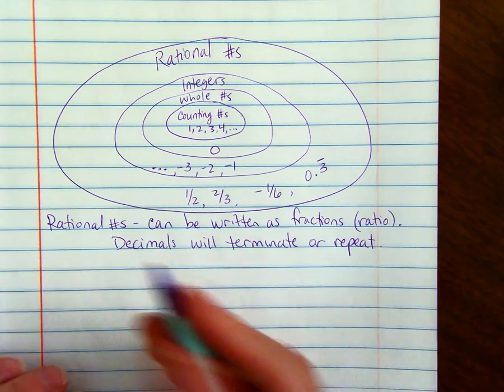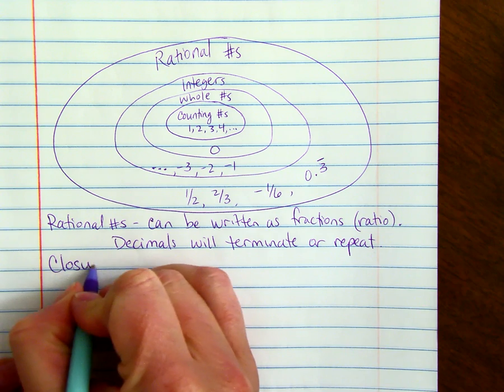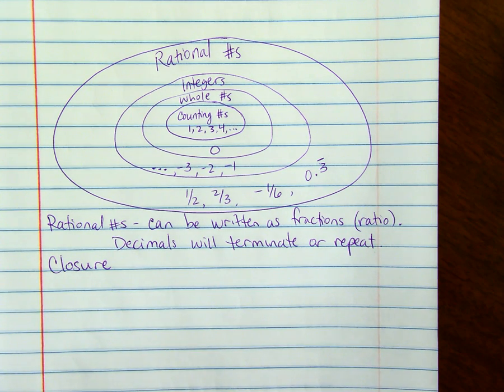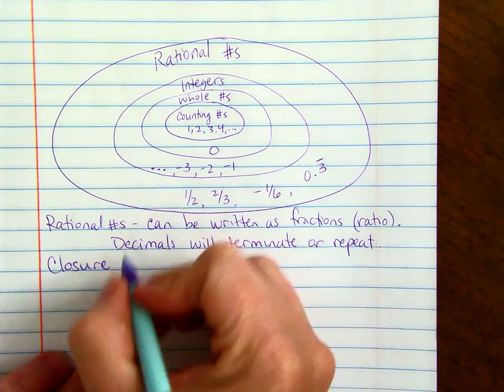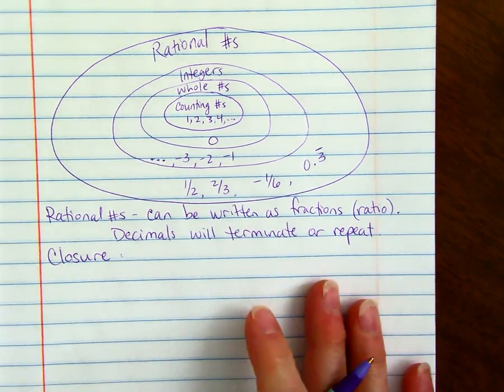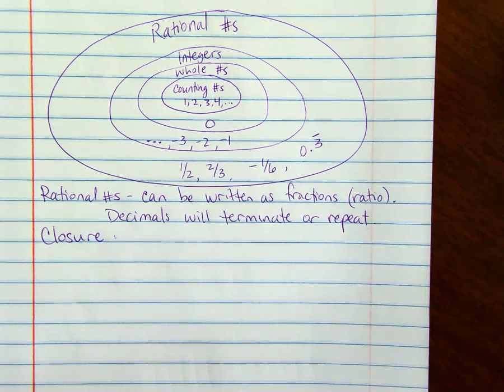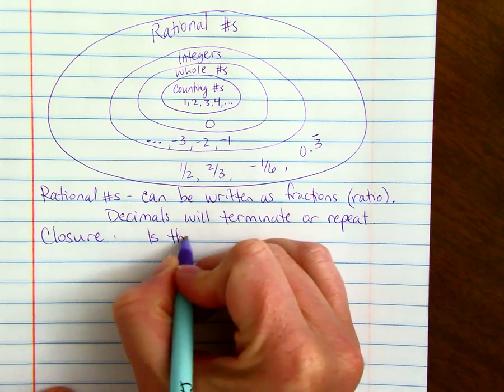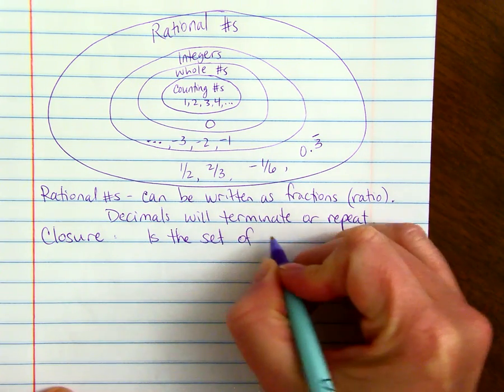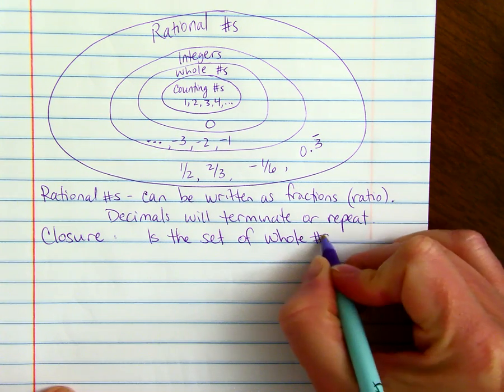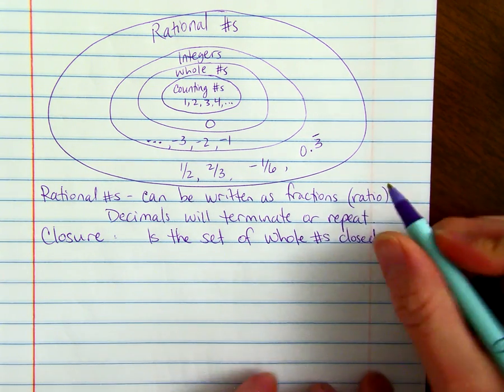Now we have something that's called closure. Closure just means that a set of numbers will, when you do the operation, stay within the set. If we're talking about certain sets of numbers, for example, the set of whole numbers, you might be asked, is the set of whole numbers closed under...